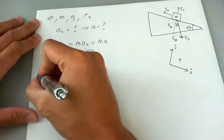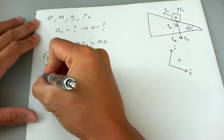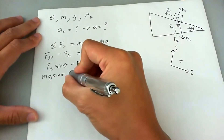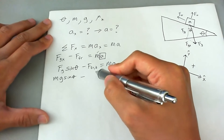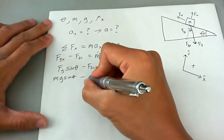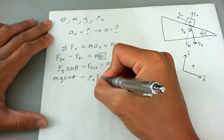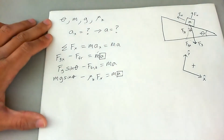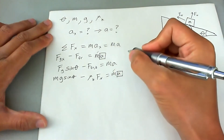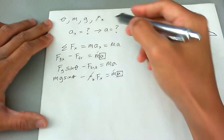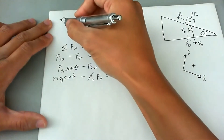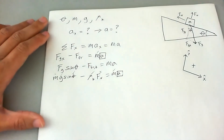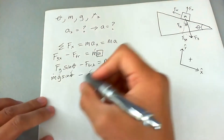Breaking it down even more: the force of gravity is MG, so FG sine theta becomes MG sine theta. The force of kinetic friction is mu-kinetic times normal force, and that equals MA. Evaluating what we know: we know mass, mu, theta, and g. We don't know the normal force yet, so this is where we go ahead and do our little side quest.